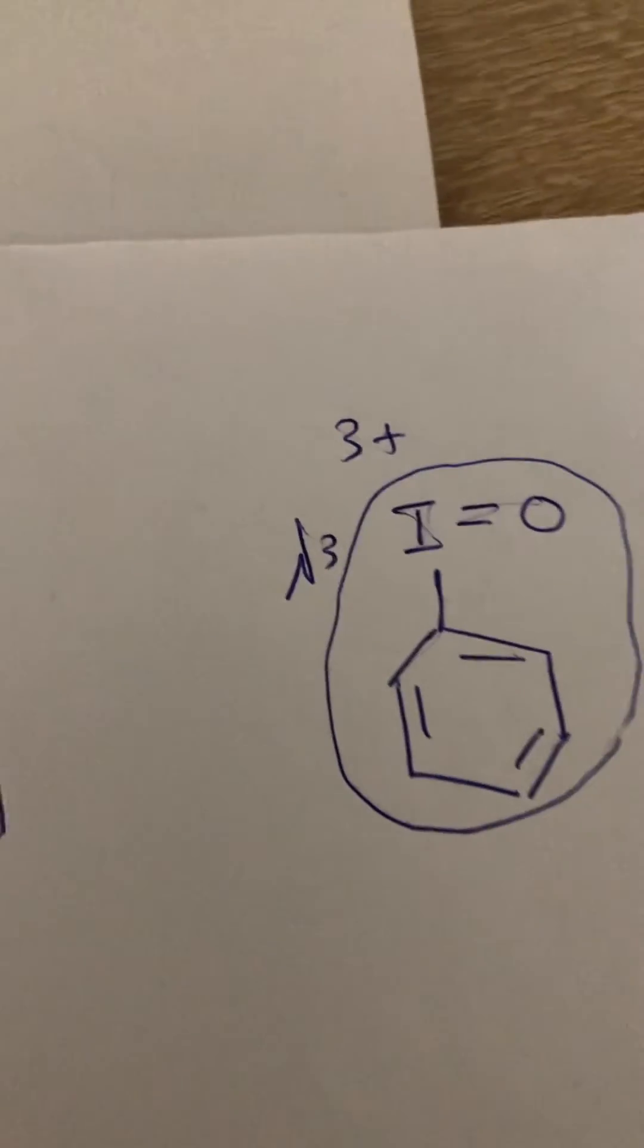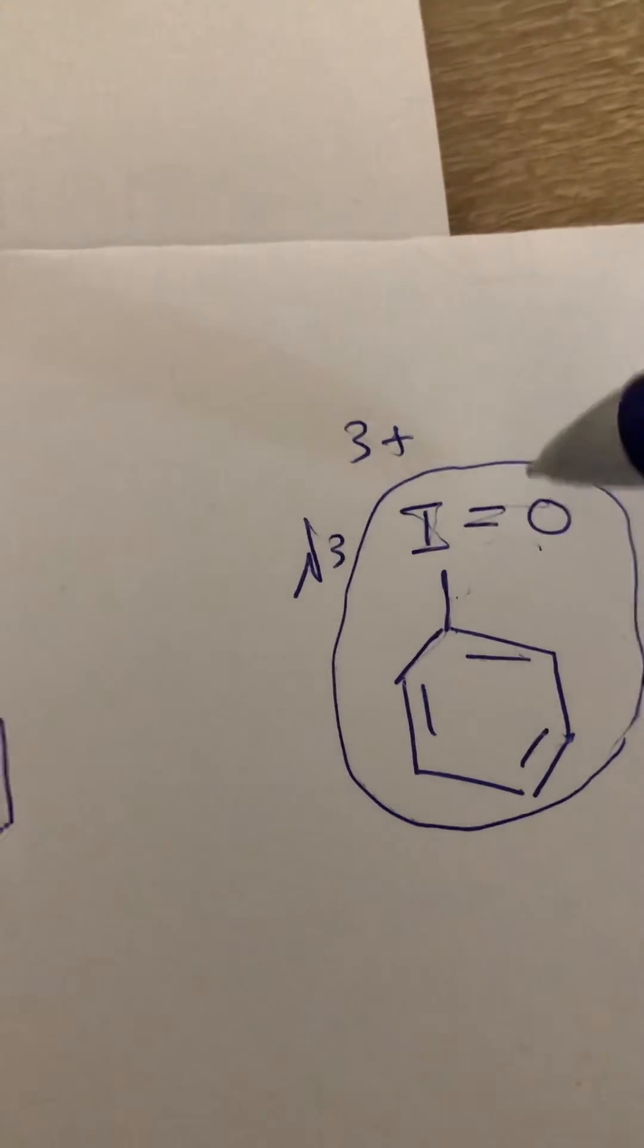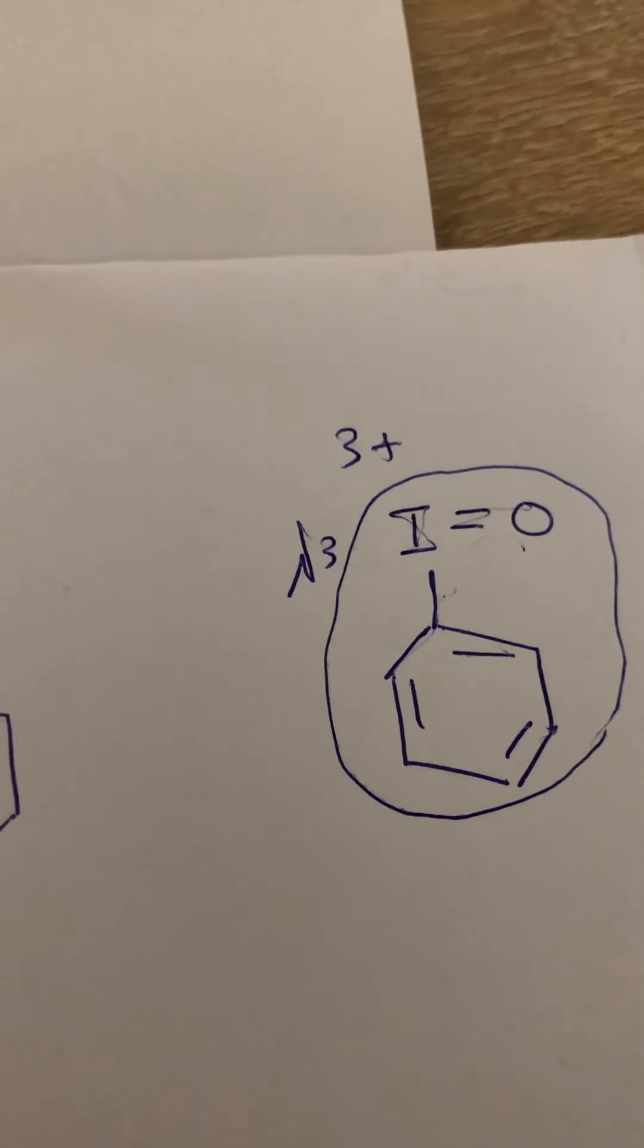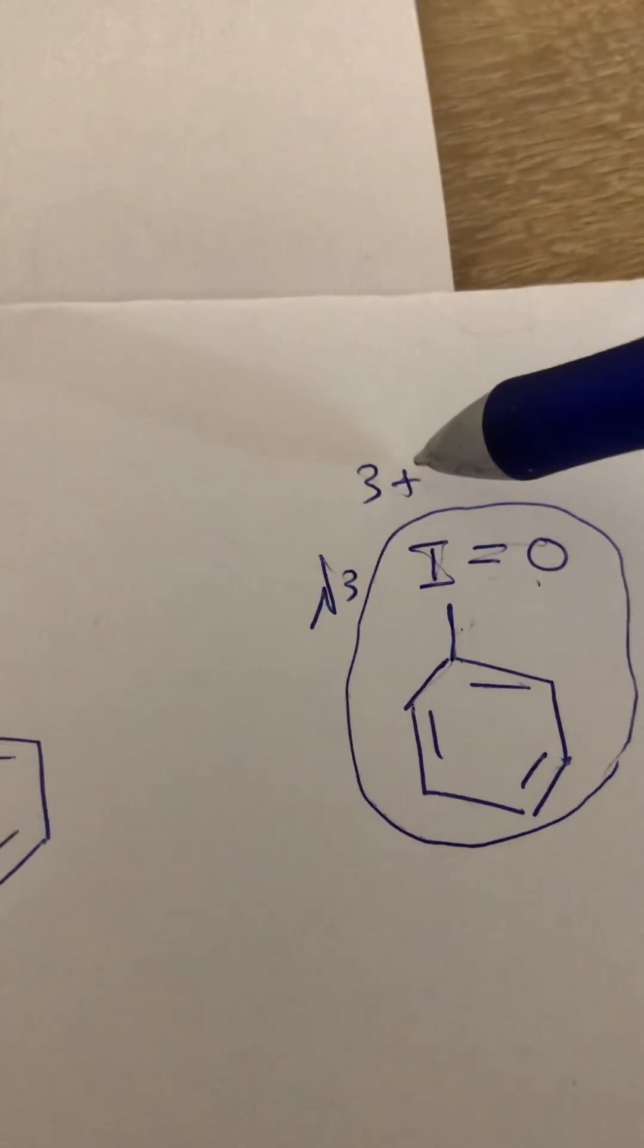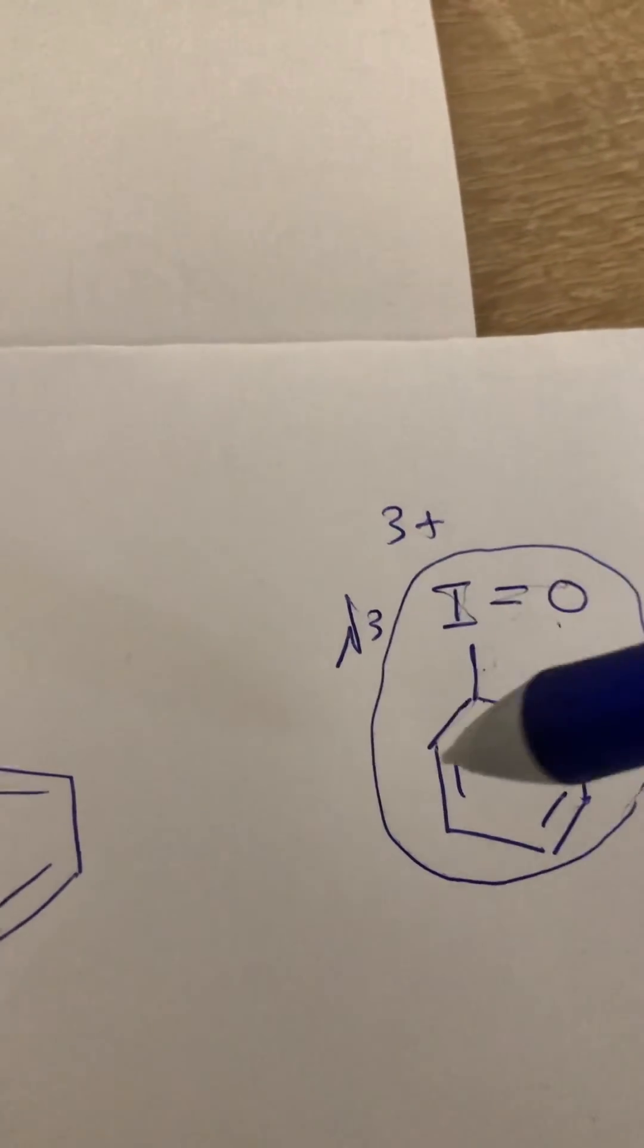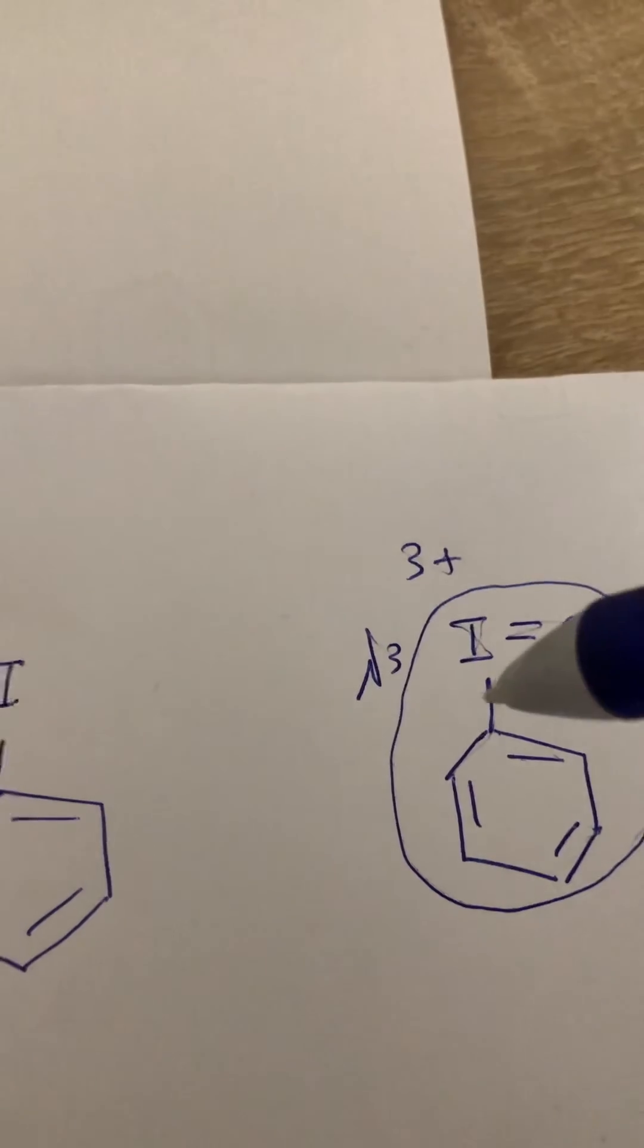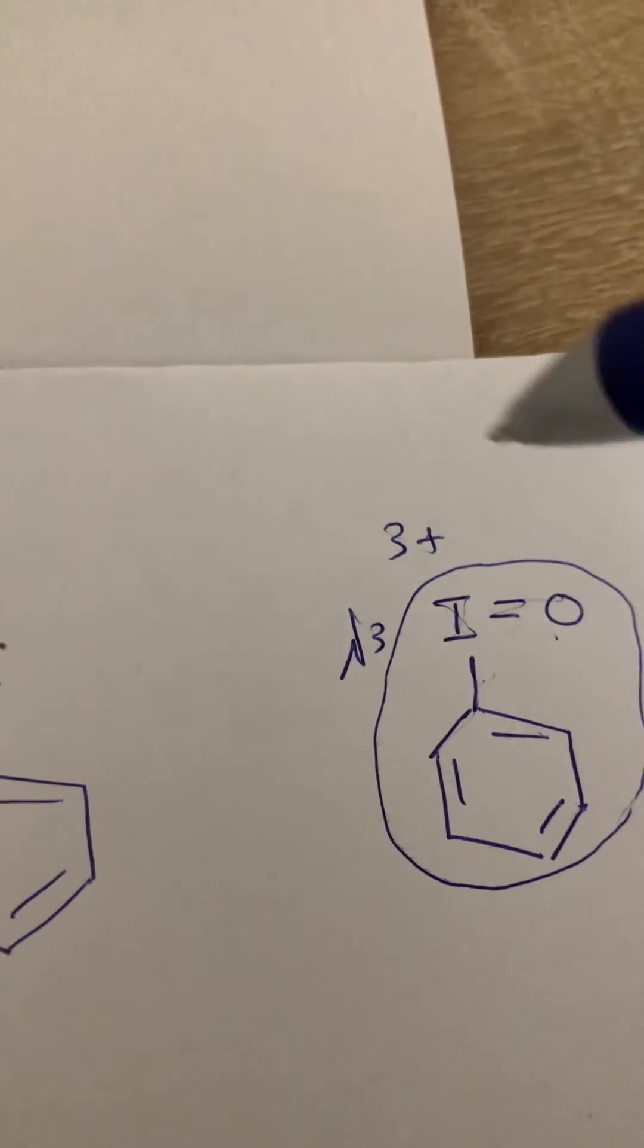The iodine makes three bonds: this is the first bond and two bonds with the oxygen. So the oxidative state of this iodine is plus three, and the IUPAC called this system of iodine lambda 3. So this compound is a hypervalent iodine compound.